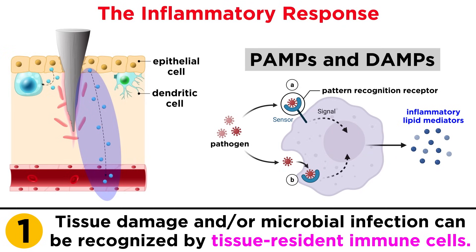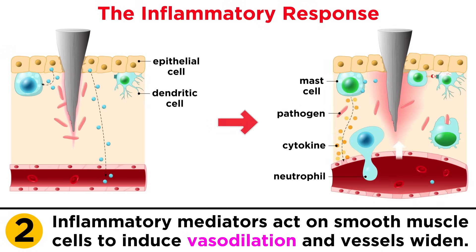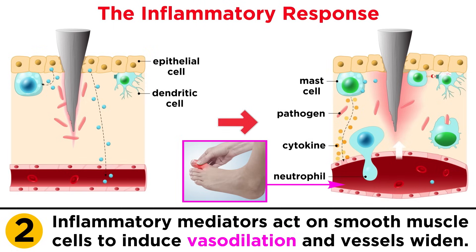Activated macrophages release inflammatory lipid mediators like leukotrienes, prostaglandins, and platelet-activating factor, as well as other chemicals like nitric oxide. These inflammatory mediators act on the smooth muscle cells surrounding the vasculature to induce vasodilation, which is a widening of the blood vessels. Vasodilation increases the volume of blood while slowing down blood flow, and is responsible for the redness and heat that often accompanies inflammation.